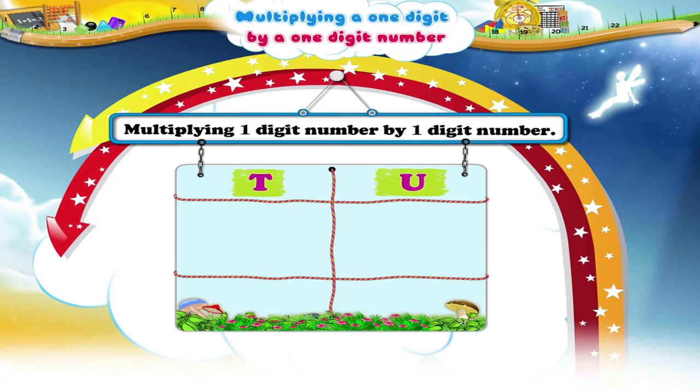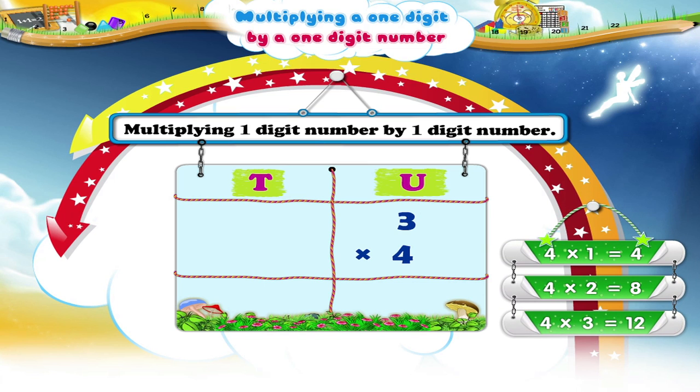First you place both three and four one below the other in the units place. Next you say the four times table up to four threes. Four ones are four, four twos are eight, four threes are twelve. Hence the product is twelve. So we write two in the units place and one in the tenth place.